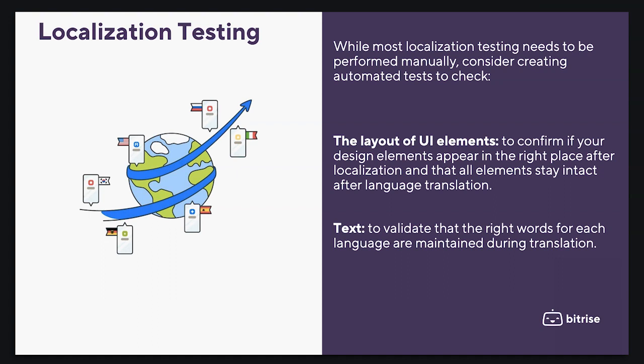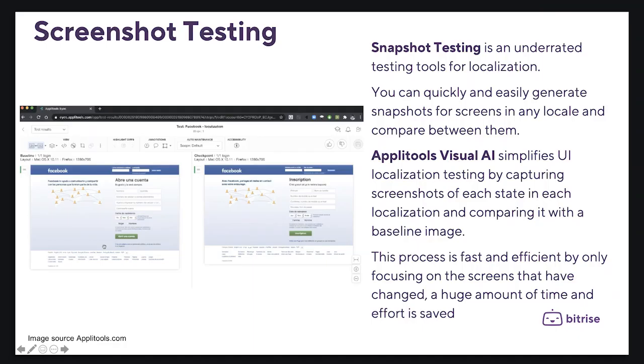Automated tests help confirm if your design elements appear in the right place after localization and that all elements stay intact after language translation. The next step is to validate that the right words for each language are maintained during translation. Snapshot testing is an underrated testing tool for localization.